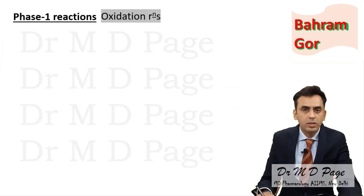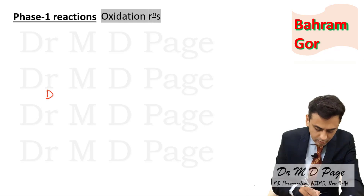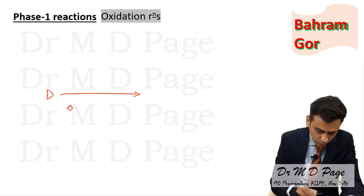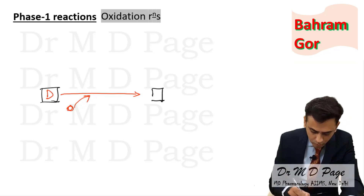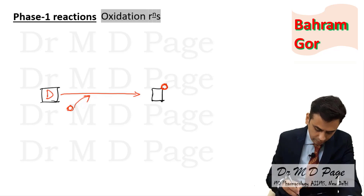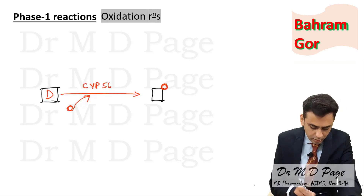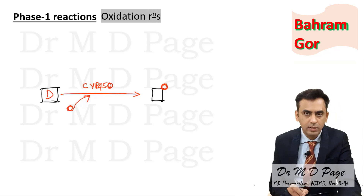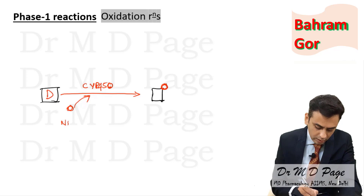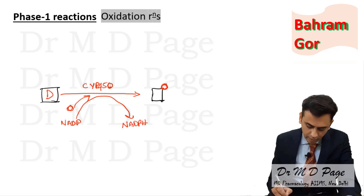In phase one reactions we will be dealing with oxidation reactions. Consider this is a drug — what you are doing is adding oxygen to it, so that this drug gets oxidized. The enzyme required for this is cytochrome P450. Since you are adding oxygen and oxidizing the drug, you need something that gets reduced, and that something is NADP, which gets reduced to NADPH.